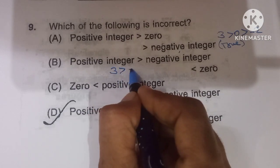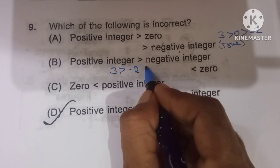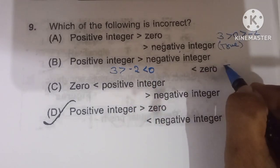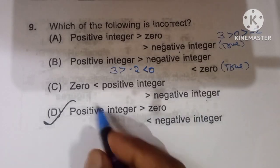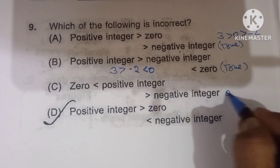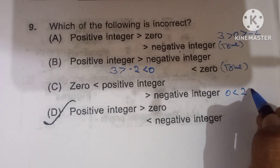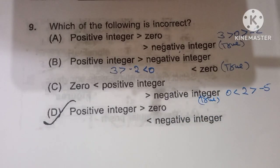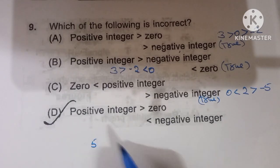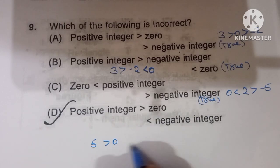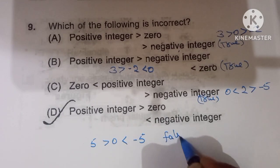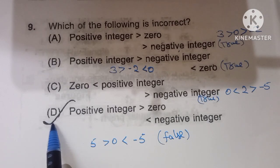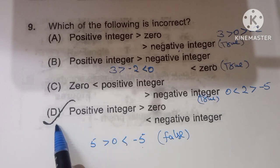Statement C: 0 is less than any positive integer and greater than any negative integer — true. Statement D: a positive integer such as 5, which is greater than 0, is also less than a negative integer like minus 5 — this is false, since 0 is greater than minus 5. So option D is the incorrect statement and the correct answer.